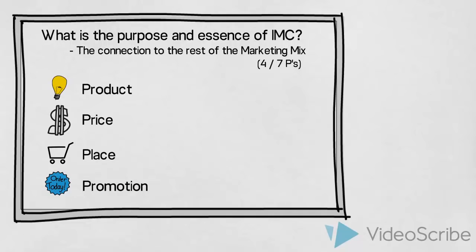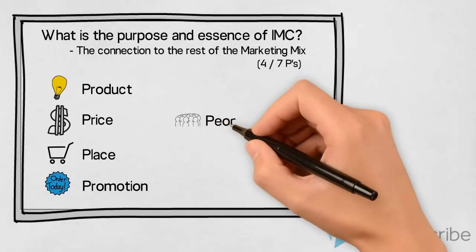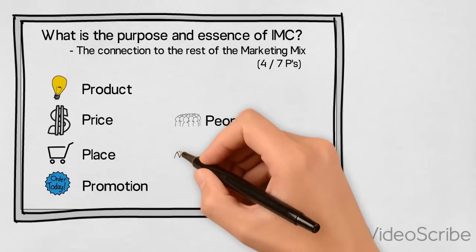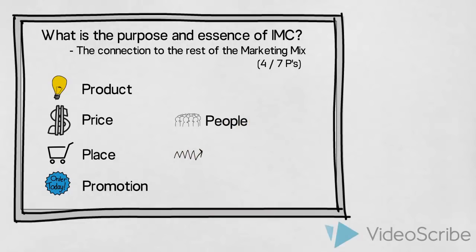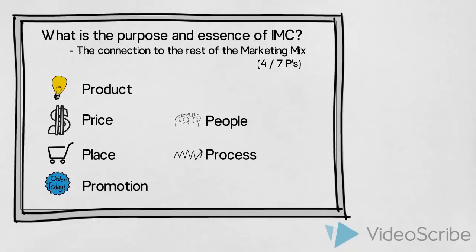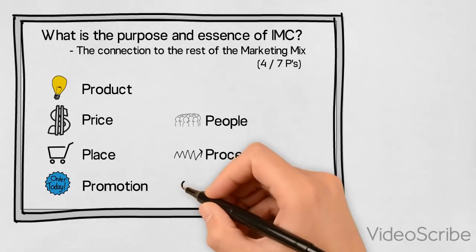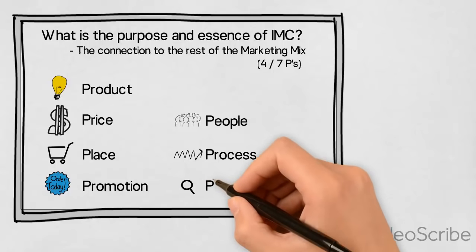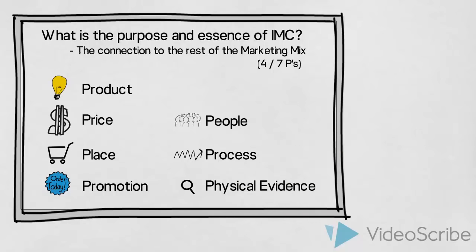If we are dealing with an offering that is better described as a service, or perhaps a product that includes large elements of service, we might also want to look at the additional three P's: the people that are involved in delivering the service, the process that our customers will go through in order to receive our service, and the physical evidence — any visible or tangible elements that the customer will see, hear, or in other ways experience when receiving the service.